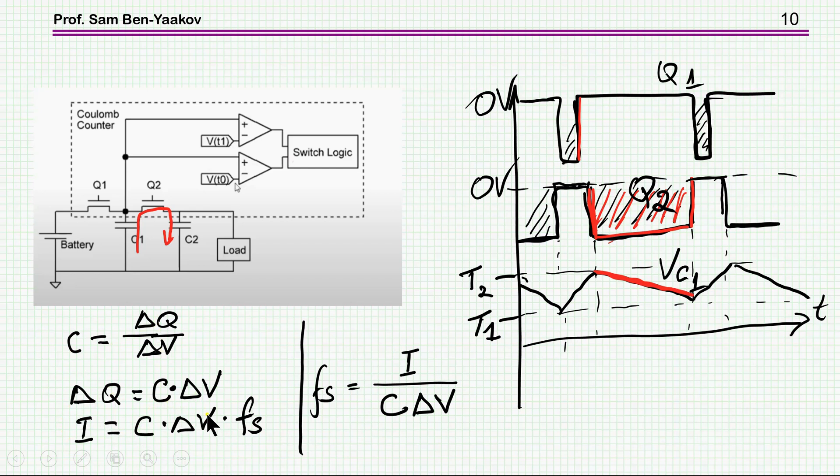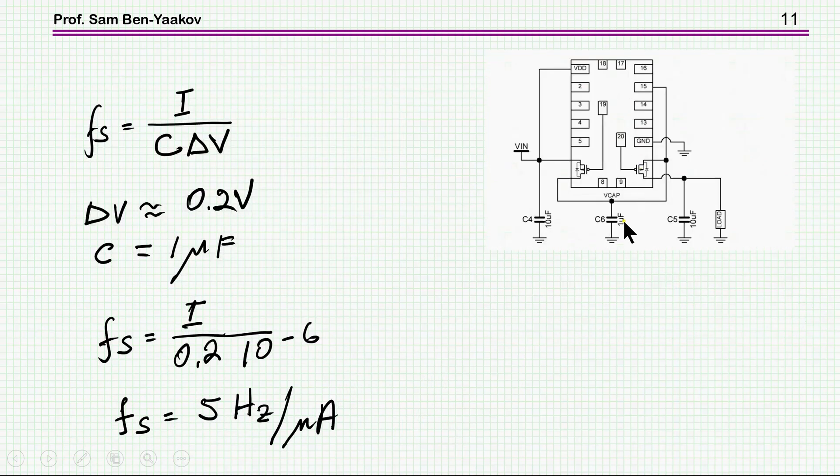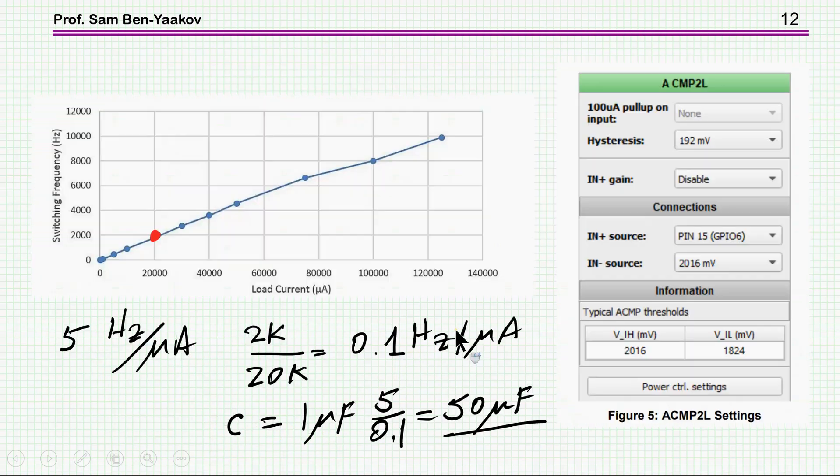Therefore, the current is delta Q times frequency. And therefore, the frequency is the current divided by C delta V. So in this, in the application note, they are showing one microfarad, and the delta V is 0.2. So plugging it in, this is the switching frequency, and I'm expressing it as 5 hertz per microamp. This will be the switching frequency, and it depends on how much current you are consuming here. They are also supplying this measurement curve, and this is, by the way, a window of this GUI. You see that the thresholds here are 2 volt and 1.8 volt, and that the difference is 192 millivolts.